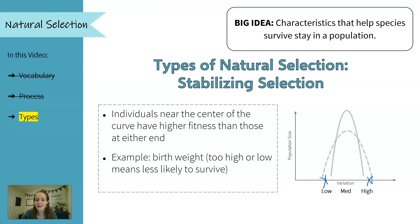So then we see less likelihood of survival, or that mom is unable to have more offspring. We want sort of a medium birth weight — not too big, not too small. And so we see in the new generation that offspring are more likely to have that middle or medium birth weight. With stabilizing selection, we lose the traits on either side and end up with more of the traits right in the middle.